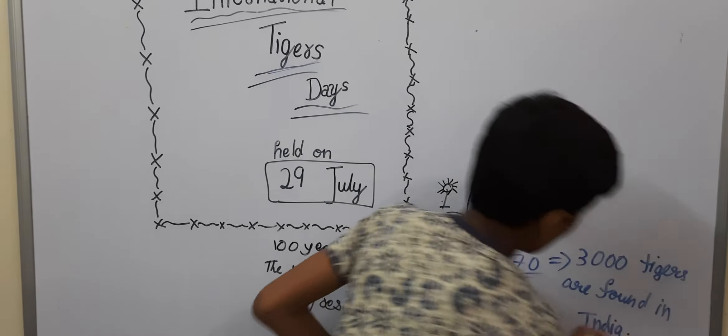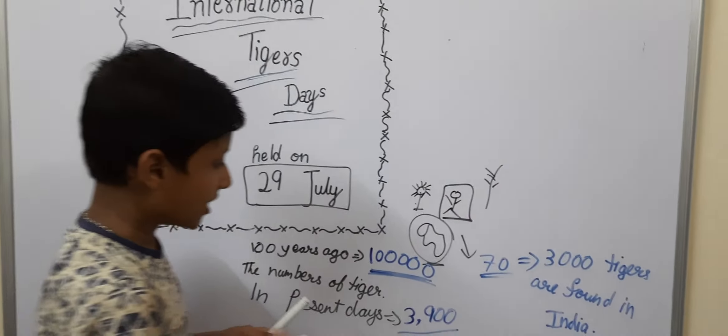Means in 3,900 tigers, 3,000 tigers are found in India. Means India is the home of 3,900 tigers.